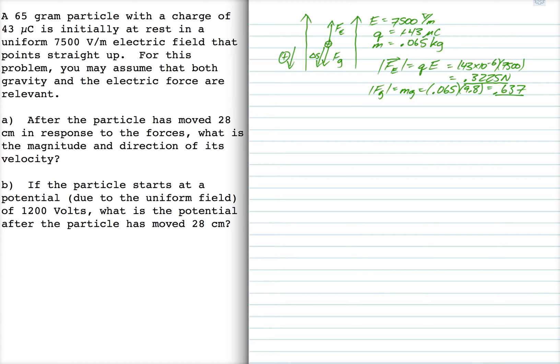Since it's moving downward, I'm going to make my sign convention in this problem that down is positive and up is negative. I always like to make my sign convention in the same direction as the motion. Okay so for part A, we're asked to find the final velocity of this charge after it's moved 28 centimeters.